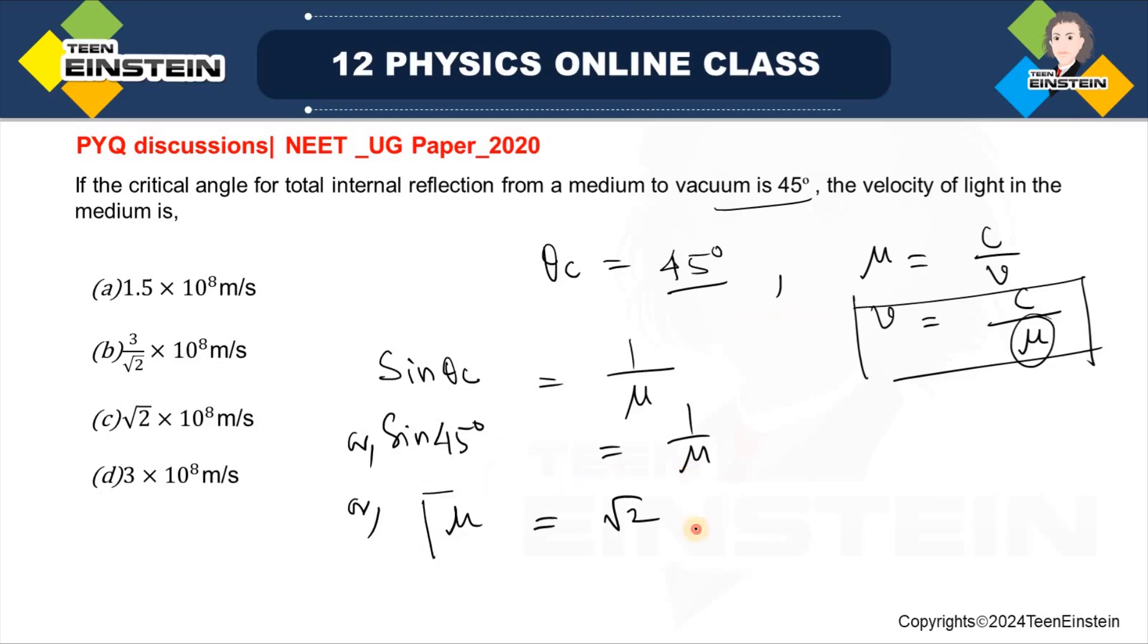So we have got the refractive index of the medium. Then what will be the speed of the light in that particular medium? That is C by mu. C is 3 into 10 to the power 8 meter per second divided by mu, mu is root over 2. Okay, so look, this option B, this is the correct answer for this question. Thank you.